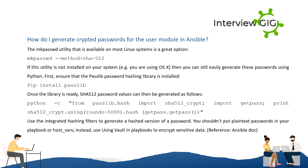How do I generate encrypted passwords for the user module in Ansible? The mkpasswd utility available on most Linux systems is a great option: mkpasswd --method=SHA-512. If this utility is not installed — for example you are using OS X — you can generate these passwords using Python. First, ensure that the passlib password hashing library is installed: pip install passlib. Once the library is ready, SHA-512 password values can be generated as follows: python -c "from passlib.hash import sha512_crypt; import getpass; print(sha512_crypt.using(rounds=5000).hash(getpass.getpass()))". Use the integrated hashing filters to generate a hashed version of a password, and don't put plaintext passwords in your playbook or host_vars — instead, use vaulted playbooks to encrypt sensitive data.